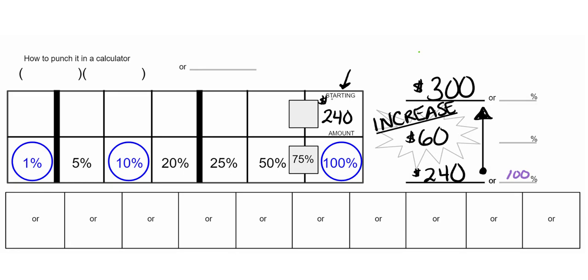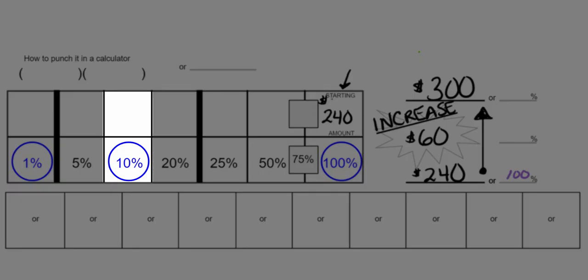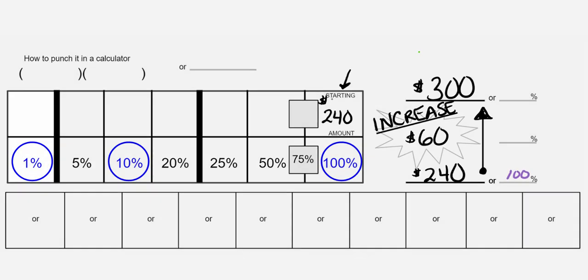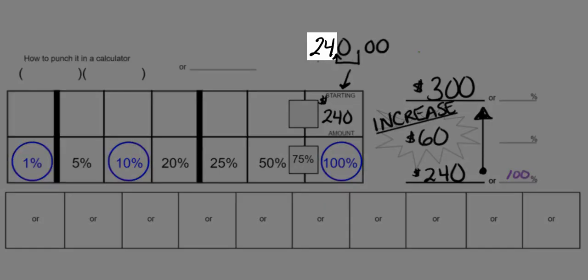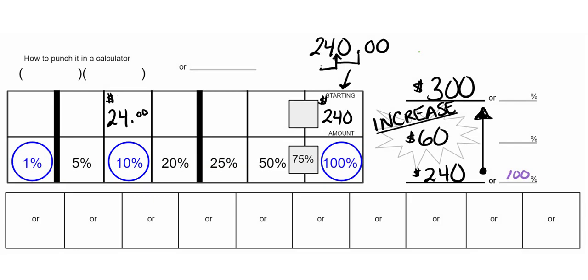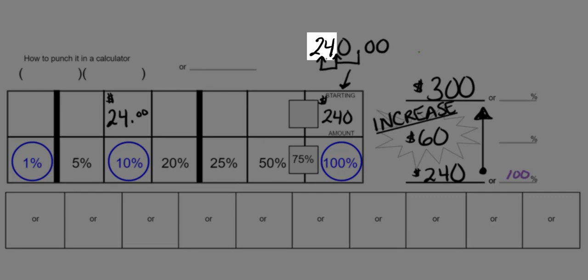Now, I told you, we can move place values really easily and get 10% and 1%. And when we write $240 out with the decimal place, it makes it very easy. Moving at one place value gets us our new number for 10%, which is $24. If I move that decimal one more place value, it gets us our new percent amount for 1%, which is $2.40.